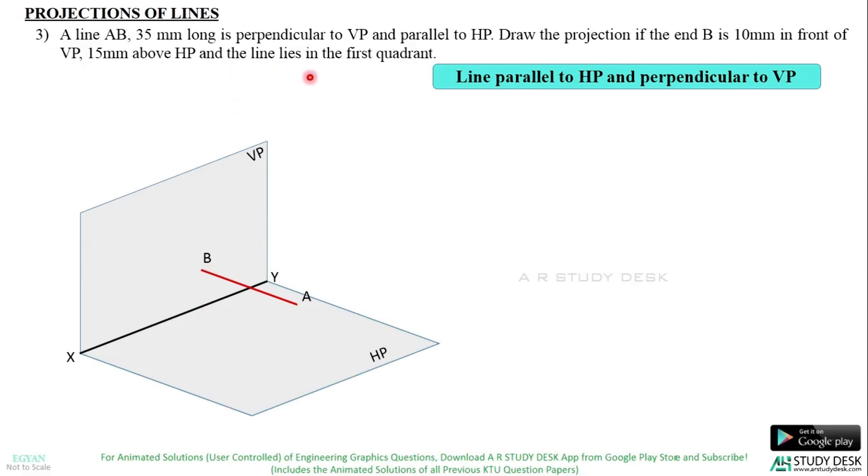Now why this statement the line lies in the first quadrant is given in the question. It is because there is one more probability of drawing this same line satisfying all these conditions. Let us check out that. Let the end B be 10mm in front of VP like this and 15mm above HP like this. And I can draw this line BA such that it becomes parallel to HP and perpendicular to VP but not in this direction. What happens if I rotate this line AB 180 degrees about B. That means the end A will come in the second quadrant. So the line AB will be like this, A will be in the second quadrant, B will be here itself.